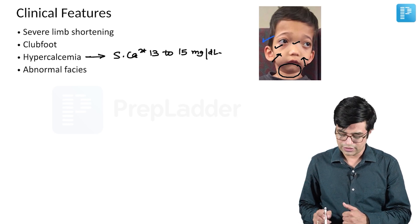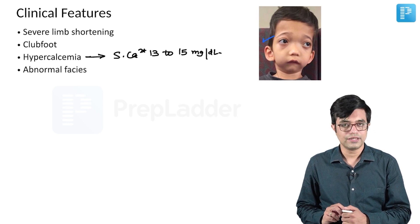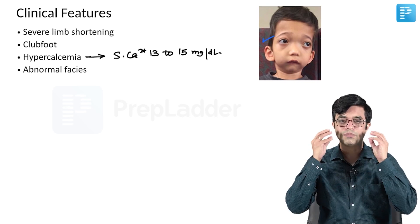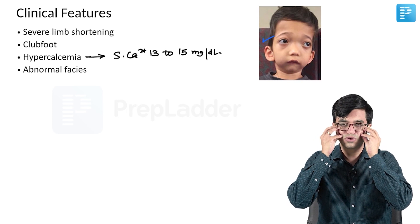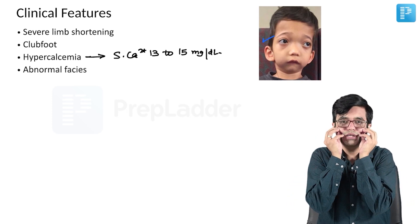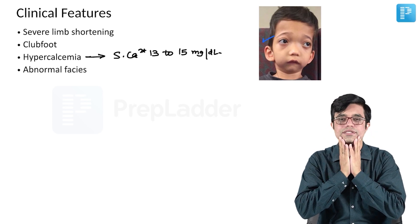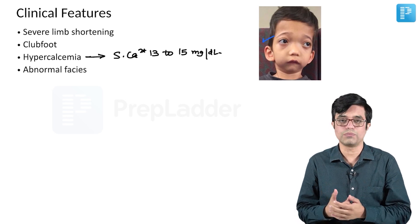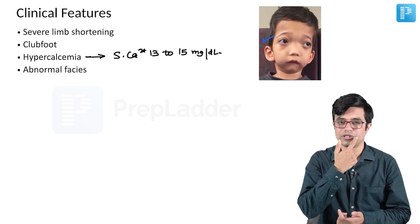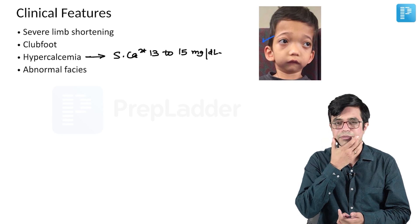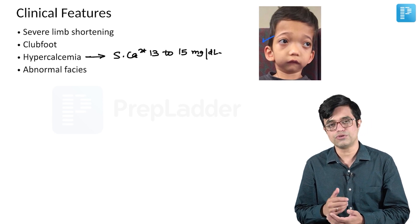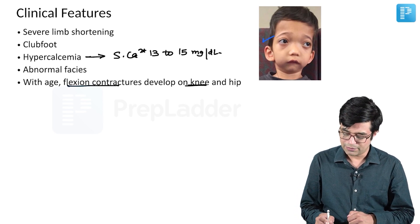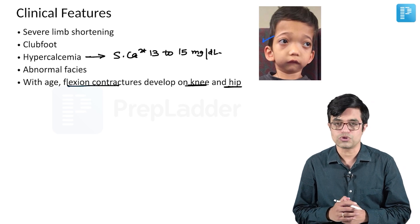They will have hypoplasia of the lower jaw and prominence of the upper jaw and maxilla. As you can see in this child — this child is having some forward protrusion of the eyes, there is hypertelorism, the maxilla and the upper jaw will be overly prominent, and the lower jaw will be hypoplastic. When these children smile, the upper jaw is very prominent so they will have bunny-like teeth coming out — that is the typical abnormal facies found in these patients. With age, flexion contractures can develop on the knee and hip, so they can have a stooping posture as well.